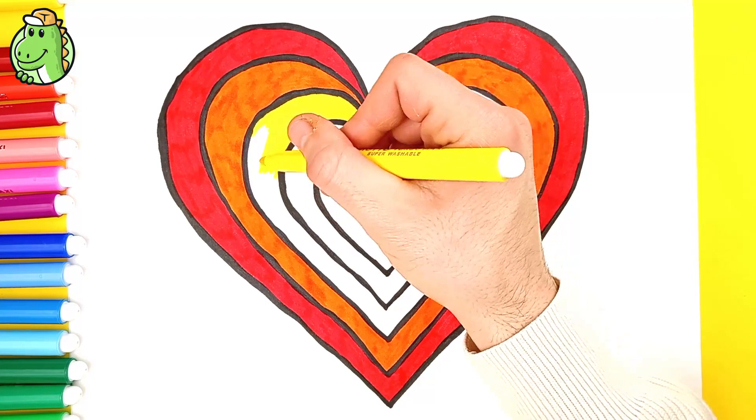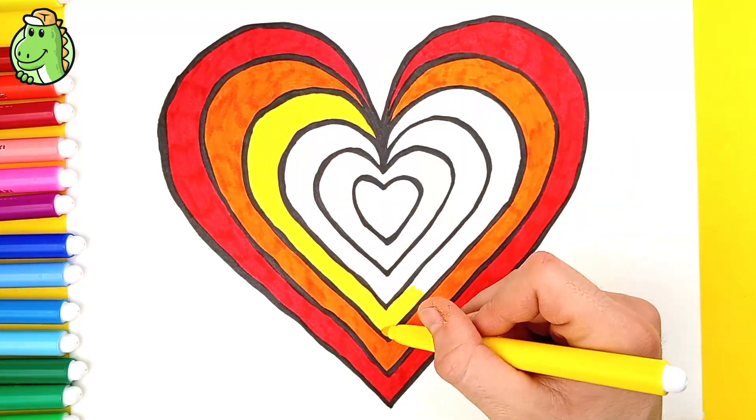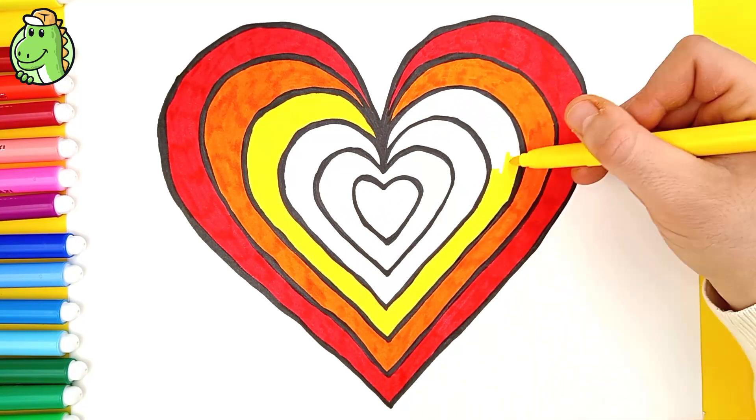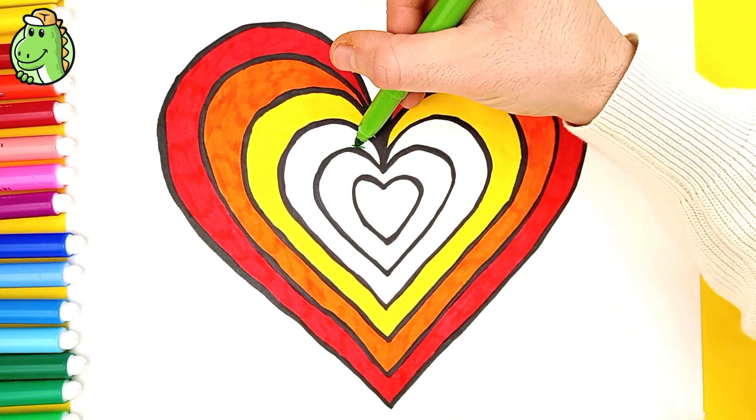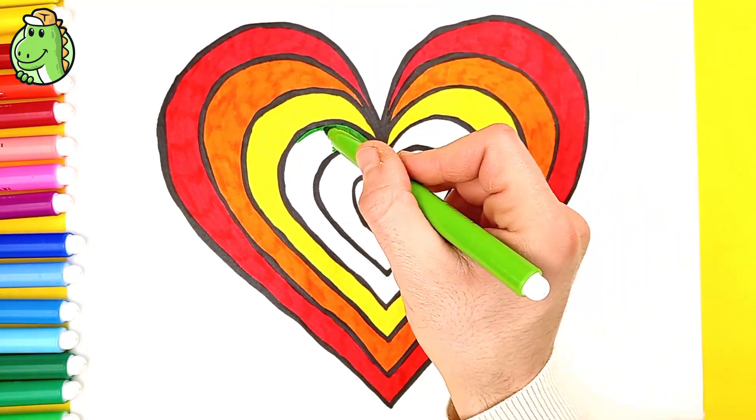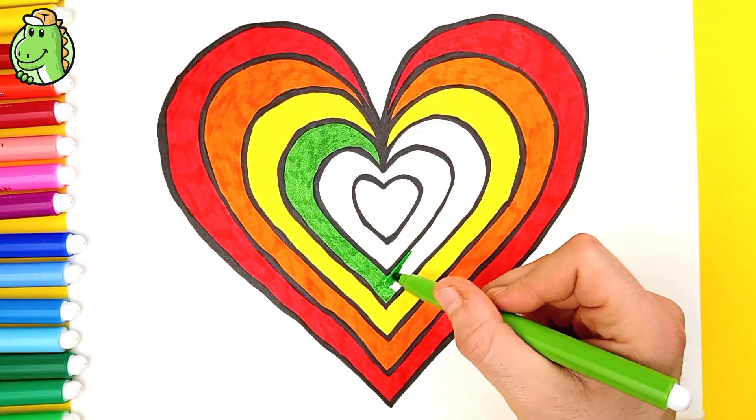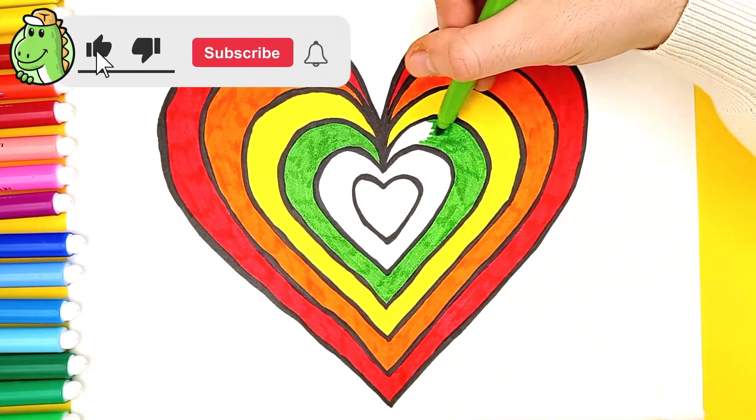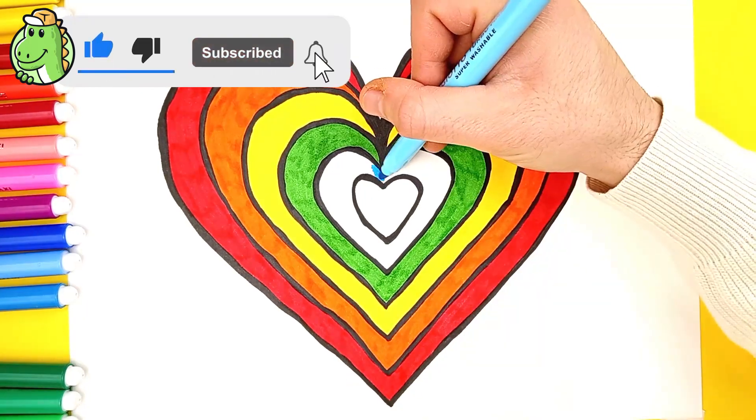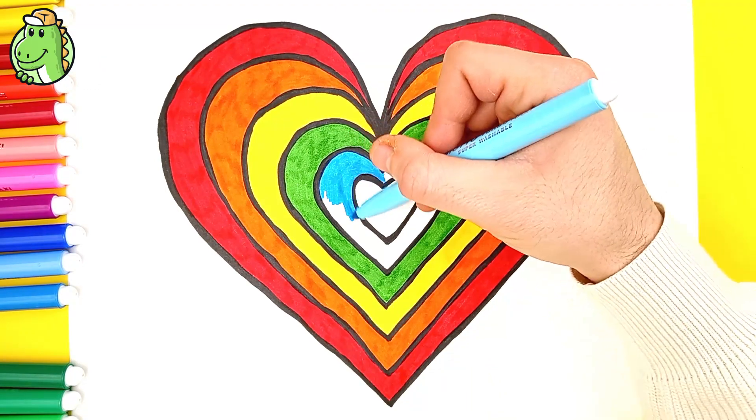The next color of the rainbow is green. Now I'm going to use this light blue marker. It's so nice!